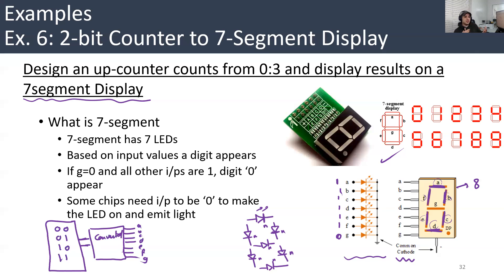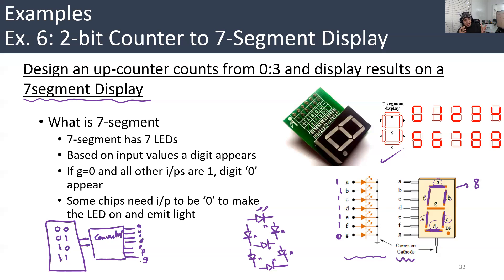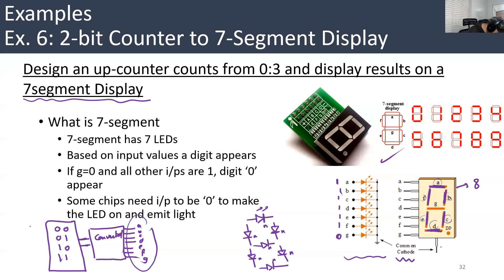So it's not a traditional counter like the one we did before. This example will show you the benefit of the output Y. We have all the time this output Y in our design — we have input X generally, we have the states and the outputs of the flip-flops, and we have this output Y. Here you're going to see the benefit of Y.